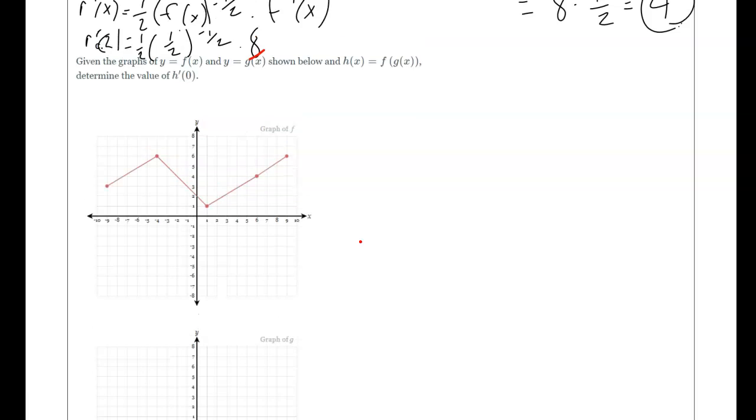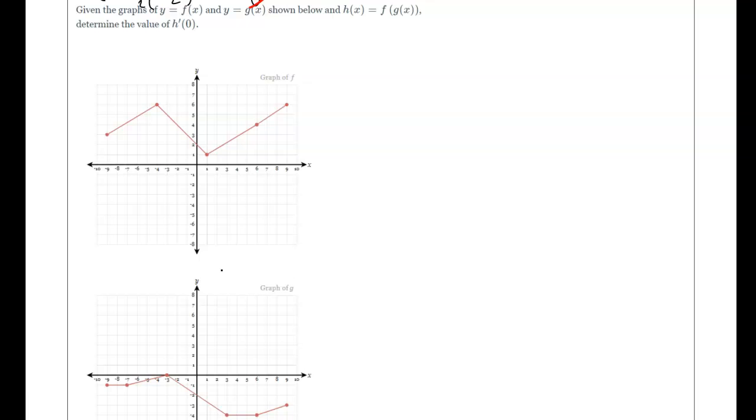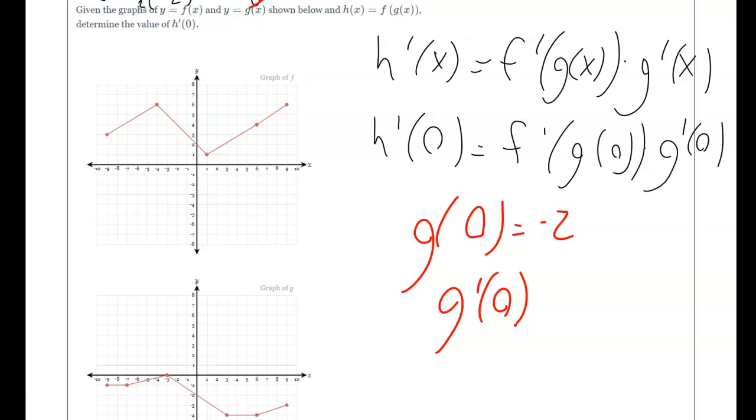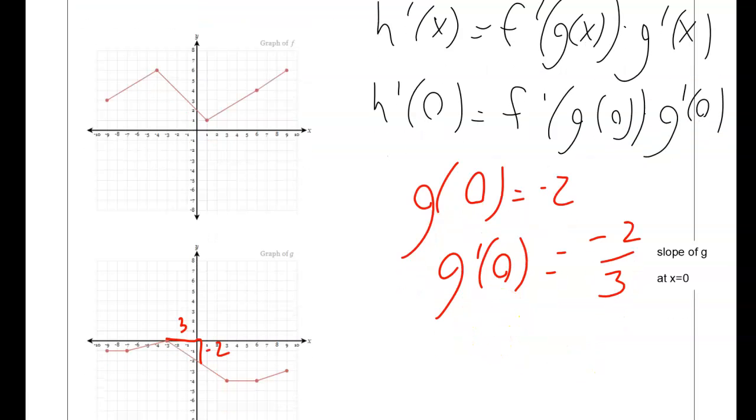My last example here is graphical. These, for most people, are the trickiest ones. I'm going to write out my derivative right away. Notice I have graphs of f and g. h is their composition, so h prime is going to be f prime of g of x times g prime of x. Then h prime of 0 is going to be f prime of g of 0 times g prime of 0. Here again, I like to write out the values that I need. g of 0 is the y value at 0, which is negative 2. g prime of 0 is the slope there, which is hard to see, but it is negative 2 over 3. This is the slope at x equals 0.